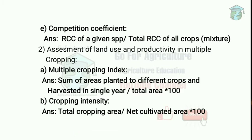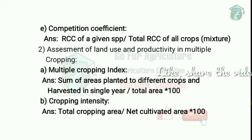Cropping Intensity equals total cropping area divided by net cultivated area, multiplied by 100. Total cropping area is the area under Kharif, Rabi, or Zaid seasons, and net cultivated area is the area under actual cultivation.